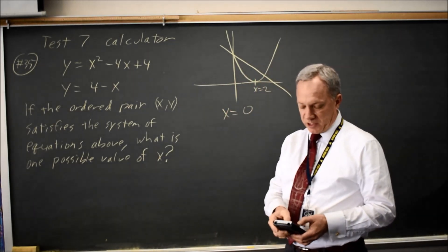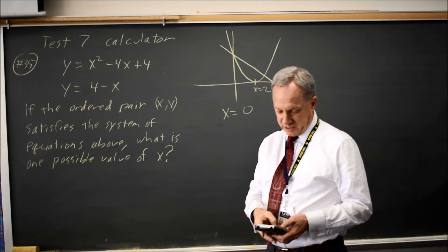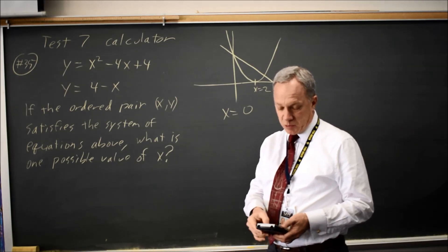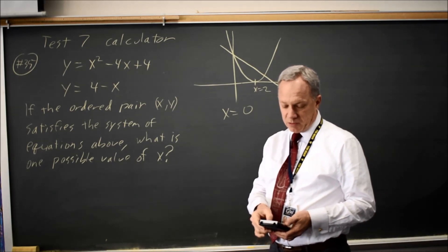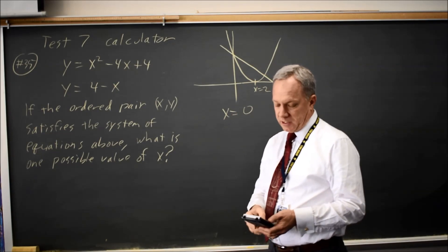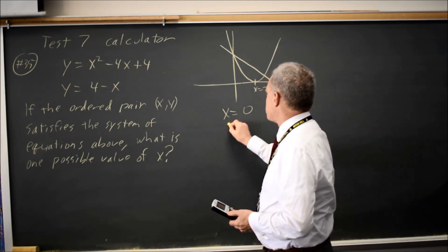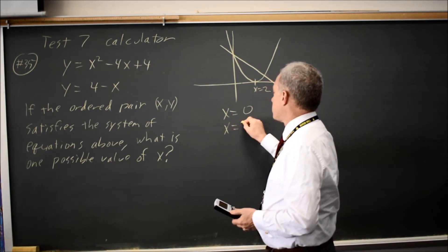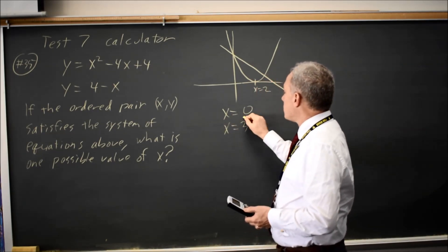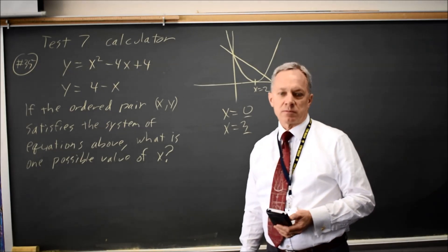Alternatively, use intersect, hit enter twice, move over near the other point and hit enter again. And you get x equals 3. Either one of these answers is acceptable.